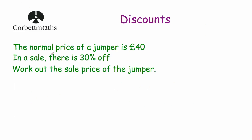Our next question says the normal price of a jumper is £40. In a sale there's 30% off. Sometimes the promotion or sale will be a percentage off — maybe 10%, 30%, 25% and things like that. So we've been told it's 30% off the price, which means it's been taken off the price. Work out the sale price of the jumper.